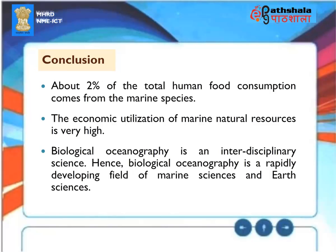Conclusion: About 2% of the total human food consumption comes from marine species. The economic utilization of marine natural resources is very high. Biological oceanography is an interdisciplinary science, and hence it is a rapidly developing field of marine sciences and earth sciences.